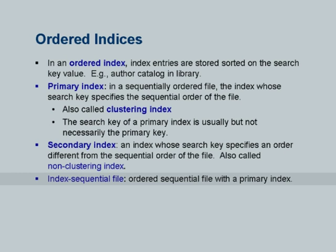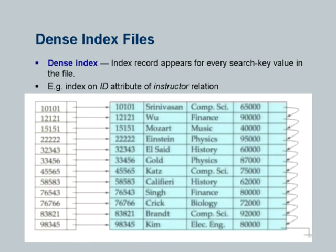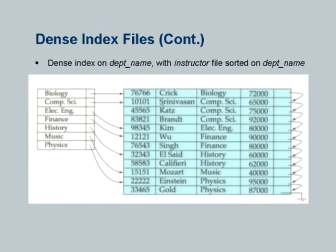There is a notion of an index sequential file and an ordered sequential file with an index. A dense index has one entry for every search key value which appears in the file — an index on ID has one entry per ID. However, if a file has multiple records for the same search key, you may have a dense index with, for example, one entry for comp sci, even though there are three instructors for comp sci. This works provided the file is actually sorted on department name, so you only need to store the pointer to the first record and the remaining ones are consecutive. If the file is sorted on instructor ID instead, you cannot do this — you need one entry per record.